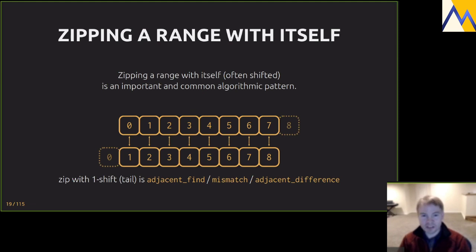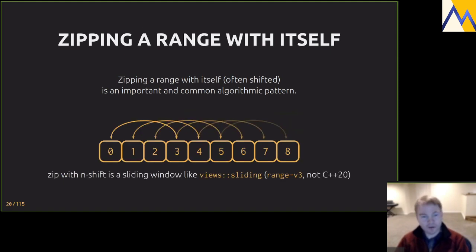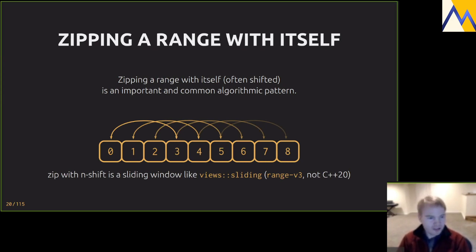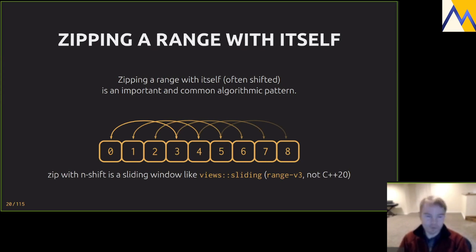Zipping a range with itself — either with a tail or with an offset — is a common algorithmic pattern. When there's an offset we don't have this yet in C++; it's a class of algorithm still being worked on, perhaps coming with ranges in C++23. Zipping with a tail is a one-shift; zipping with an n-shift gives us a sliding window. In range-v3 there's a version, but not yet in C++20 ranges.